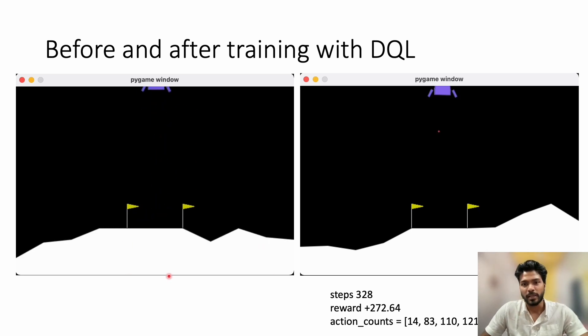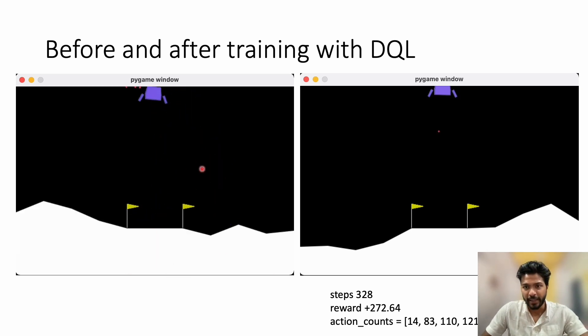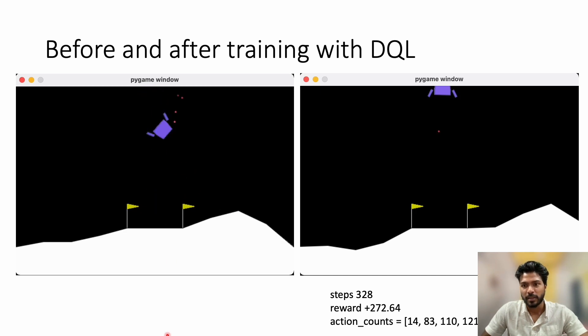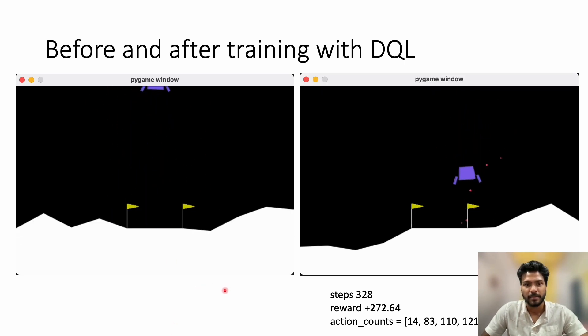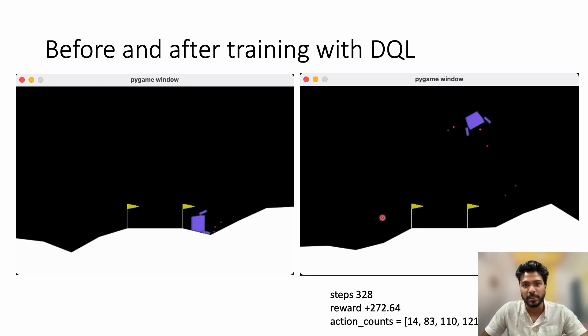The left one is before the training and the right one is after training. The lander was able to land smoothly after training. Exploration was disabled during evaluation.